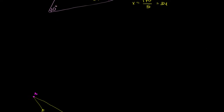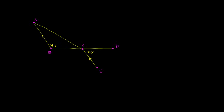Let's do another one. We have a drawing here, and what I want to do is solve for x, where 4x is the measure of one angle and 2x is the measure of another. They also tell us that one line over here is parallel to another line over there. Since they're parallel, it's probably going to involve transversals or something related to triangles.